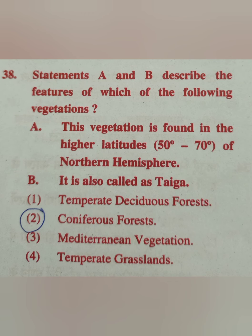Options: Temperate deciduous forest, coniferous forest, Mediterranean vegetation, temperate grasslands. The correct answer is option 2 — coniferous forest. We will read about forests in the next video as well.